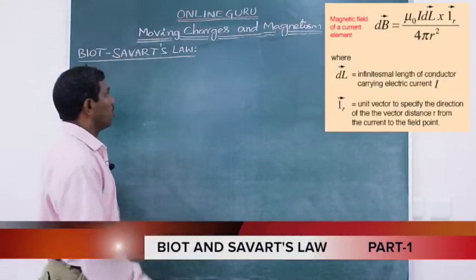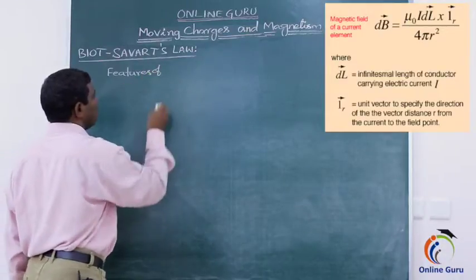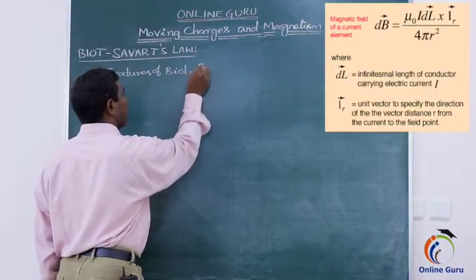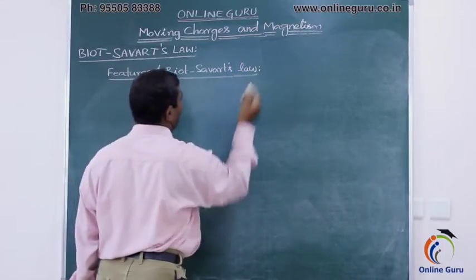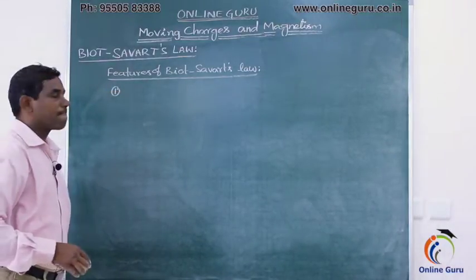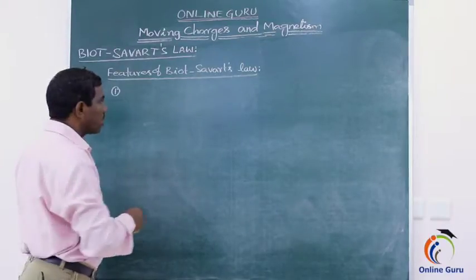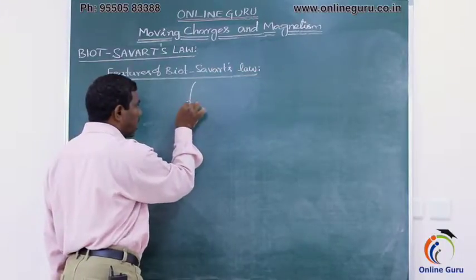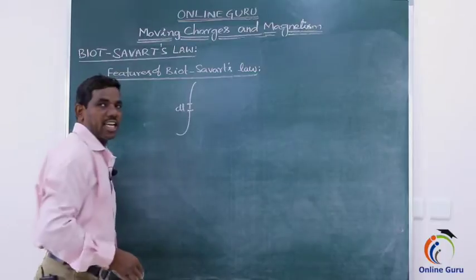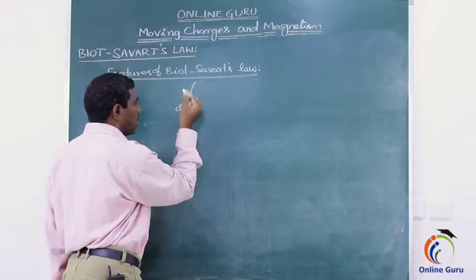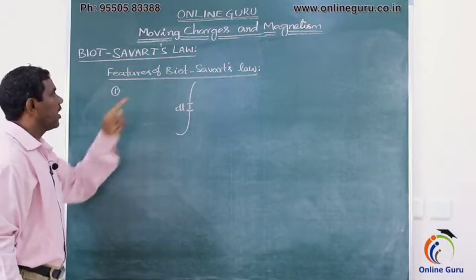What are the important features of Biot-Savart's Law? The first feature of Biot-Savart's Law is that experimentally it is very difficult to verify, because considering a small current element DL is practically very difficult. Due to this, explaining Biot-Savart's Law experimentally is a very difficult task — this is the first important feature.